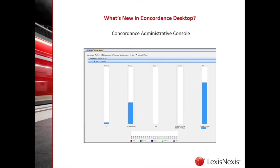First and foremost, we have implemented a Concordance Administrative Console. The new admin console provides administrators with better insight into and control over databases and administrative tasks. The admin console allows the administrator to handle licensing, manage and track databases. A big one is killing user sessions — for example, if Bob leaves the database open on a Friday afternoon at five, you can kill his user session. We also have logging features so you can see what's taking place on the server and in the admin console.